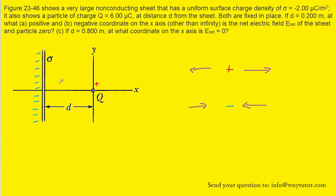If we go between the particle and the sheet, we would have two electric fields — one produced by the positive charge and one produced by the negatively charged sheet. The positive charge would produce an electric field pointing away from it, so pointing to the left. The negatively charged sheet would produce an electric field pointing towards it, which would also be pointing to the left. If we have two electric field vectors both pointing to the left, they will not cancel out, and we will not have an electric field equal to zero in this region.